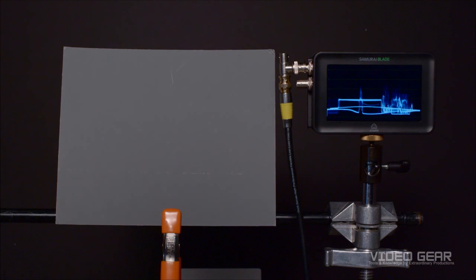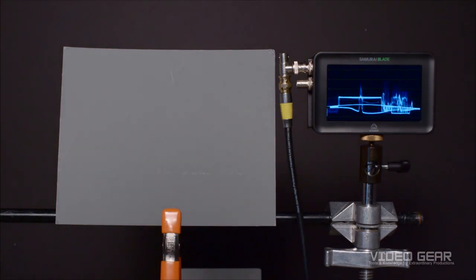Next, we'll adjust the lens aperture such that the waveform shows the gray card chart exposed at 41 IRE, then record the difference in aperture. The lens aperture is at 8 and 3 tenths. This is a 0.6 stop difference from what the light meter is reading.